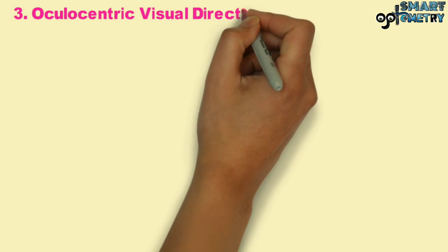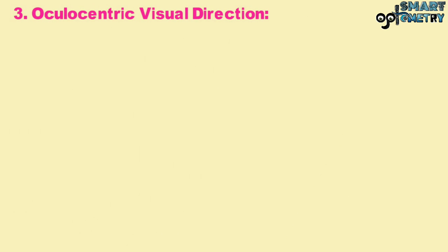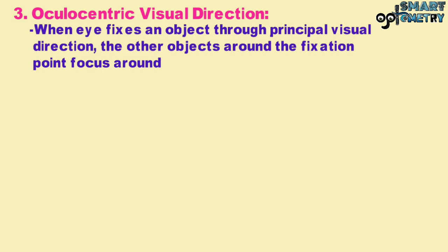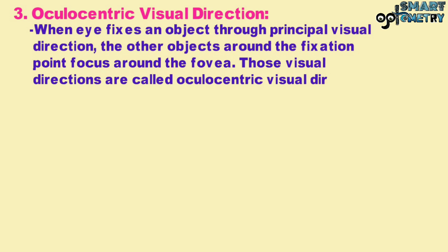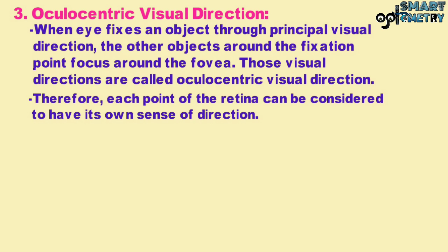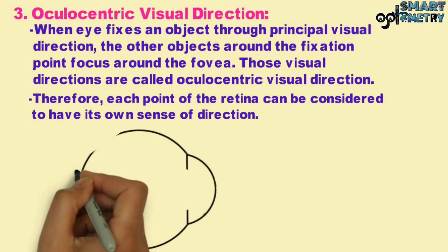Third, oculocentric visual direction. When the eye fixes an object through the principal visual direction, the other objects around the fixation point focus around the fovea. Those visual directions are called oculocentric visual directions. Therefore, each point of the retina can be considered to have its own sense of direction.